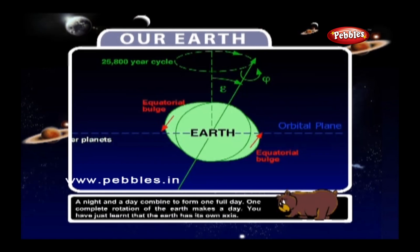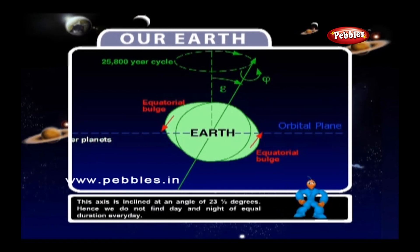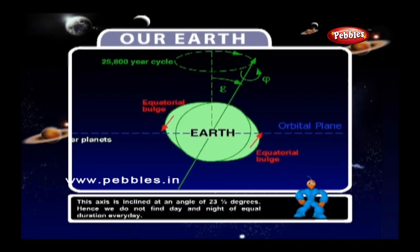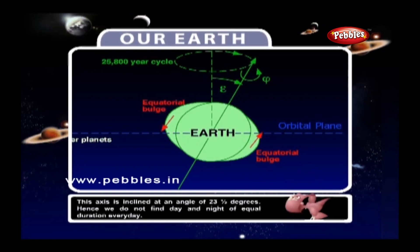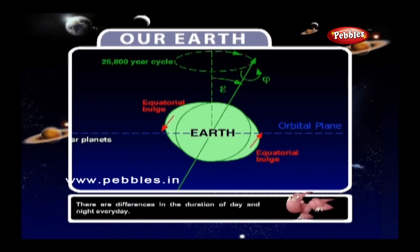The Earth has its own axis, and this axis is inclined at an angle of 23.5 degrees. Hence, we do not find day and night of equal duration every day. There are differences in the duration of day and night every day.